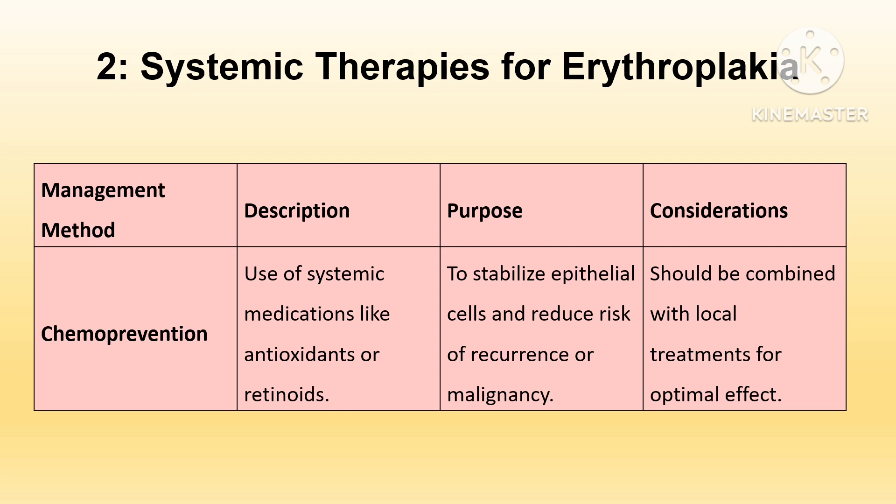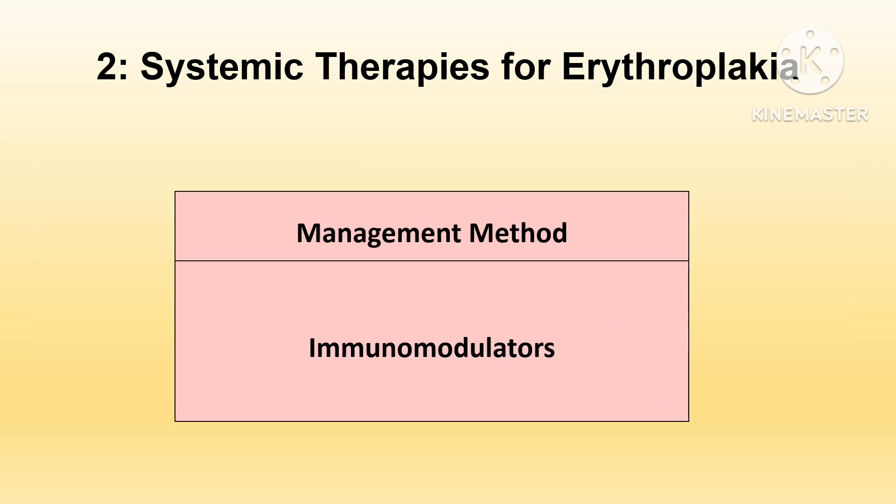Systemic therapies address underlying factors that predispose to lesion occurrence and malignant transformation. Chemoprevention uses systemic medications such as antioxidants and retinoids to stabilize epithelial cells and reduce recurrence or malignancy; these are adjunctive treatments to be combined with local treatment for optimal effect. Immunomodulators influence immune system responses — such as interferons or other biologics — to modulate immune activity in the oral mucosa and reduce dysplastic changes, though they are not widely used and more research is required on their effectiveness.